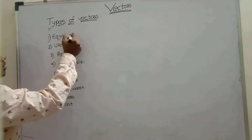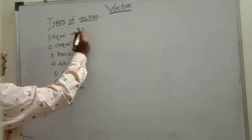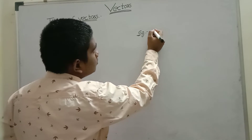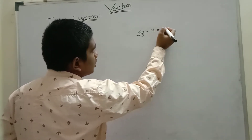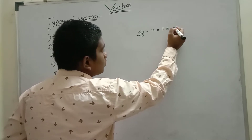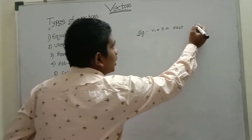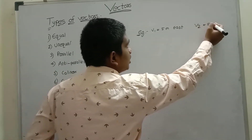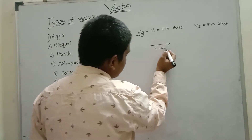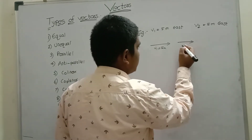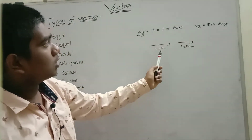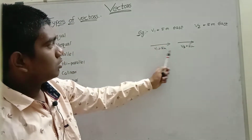Equal vectors means vectors whose magnitude and direction both are equal. For example, vector V1 equals 5 meters East, and V2 is also 5 meters East. Both directions are the same and magnitude is also the same, so these are equal vectors.